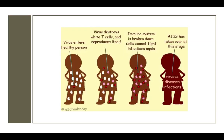HIV infection is characterized by destruction of the person's immune system so they cannot fight off infection. The virus destroys white T cells in your immune system. Once a person's T cell count is below a certain level, then AIDS — known as acquired immunodeficiency syndrome — has begun. In other words, AIDS is considered to be advanced stage HIV infection. This is when a person will start developing serious life-threatening diseases and infections. Depletion of T cells reduces the body's resistance to infectious diseases.